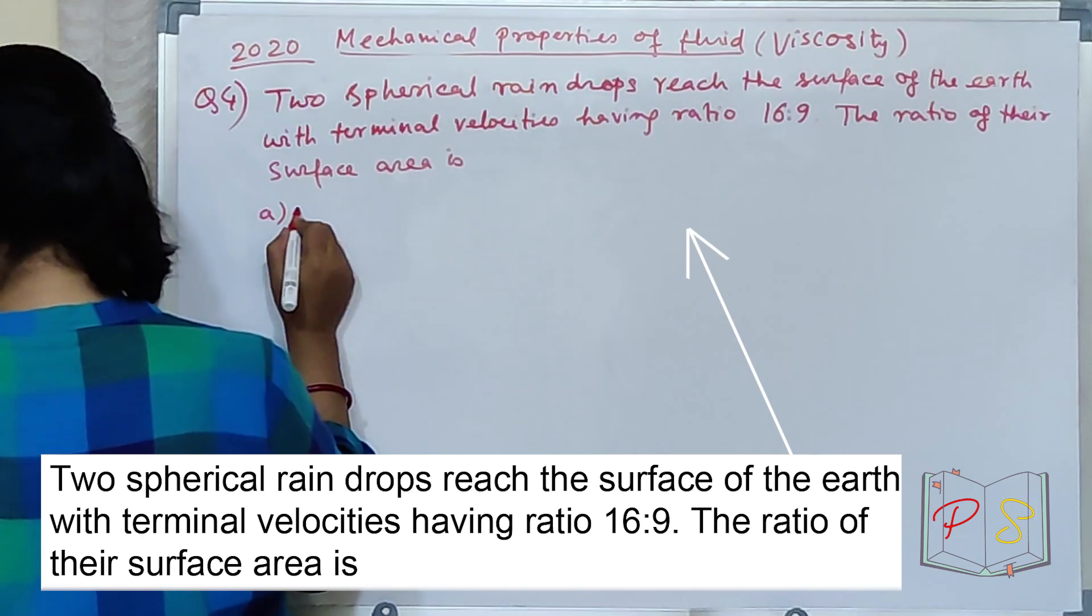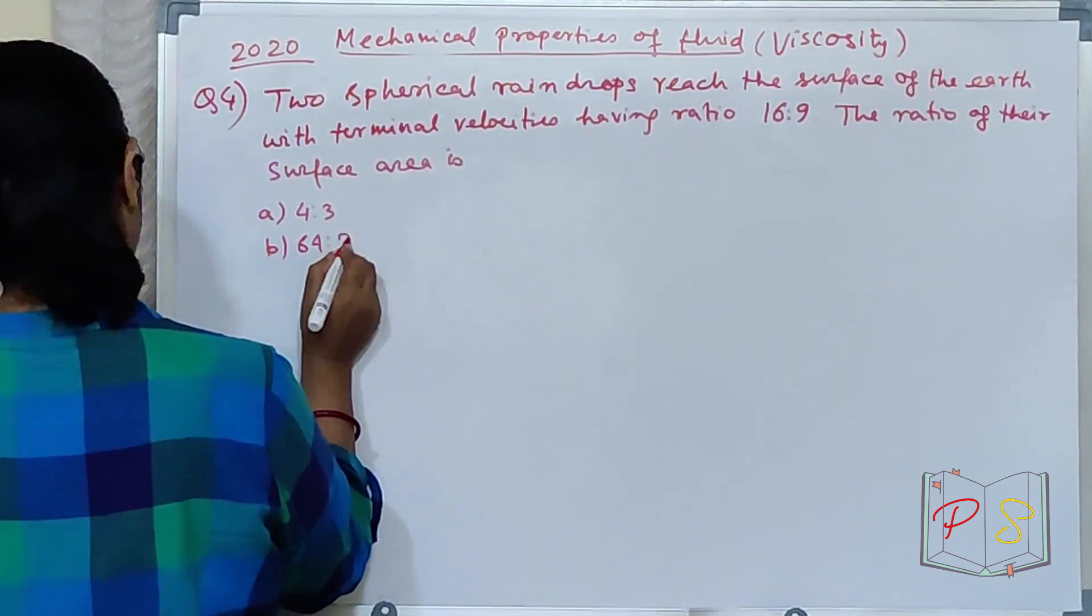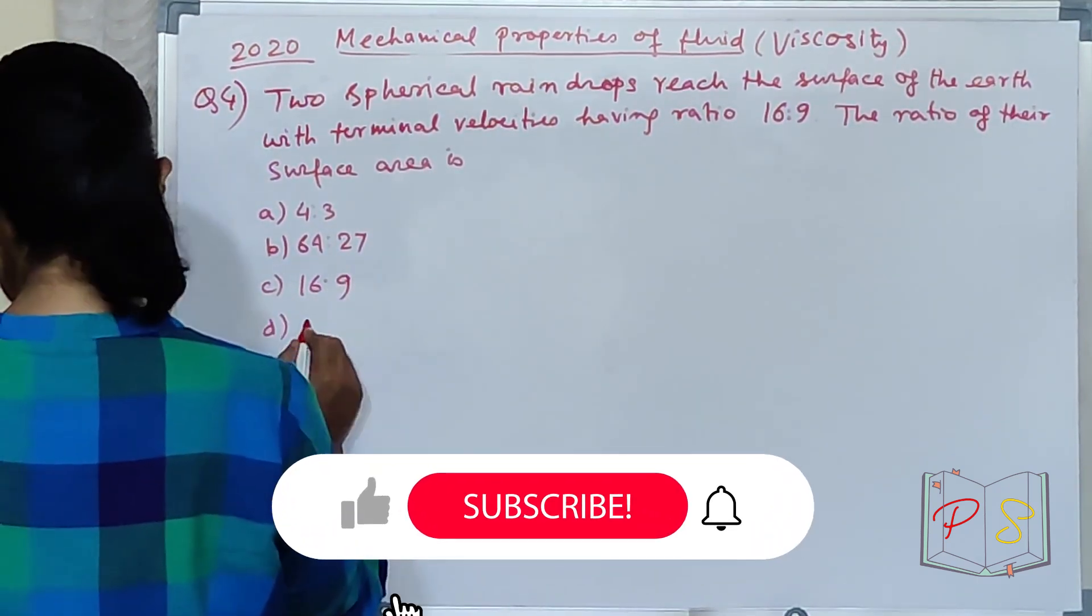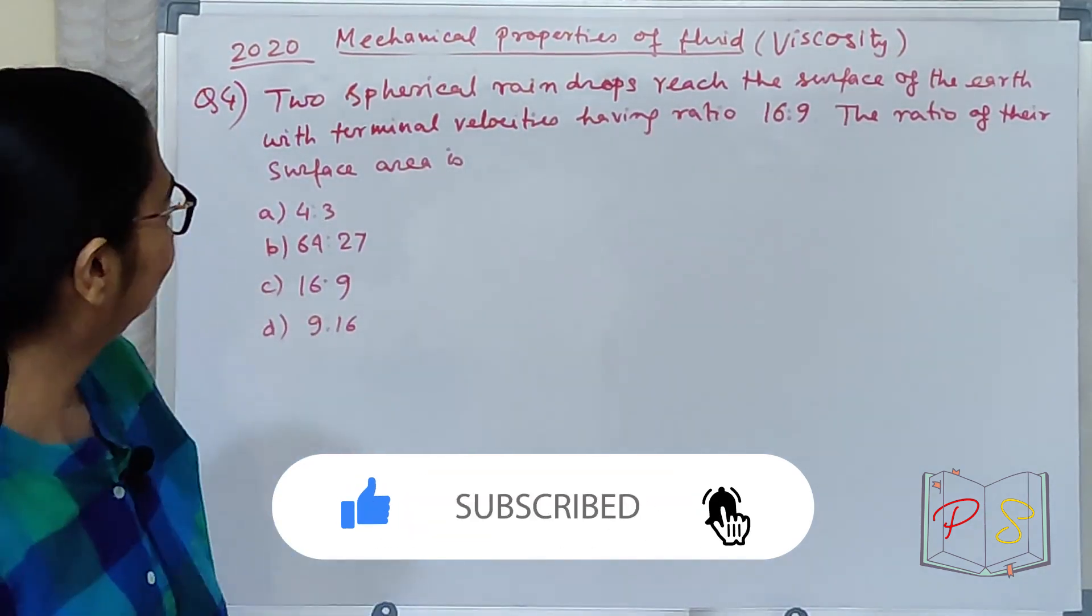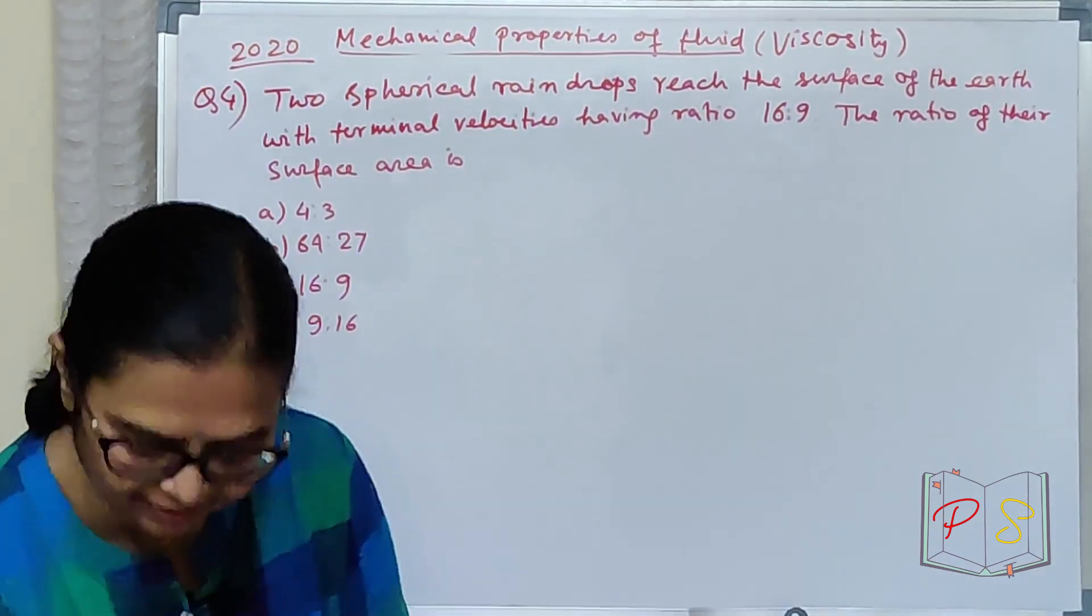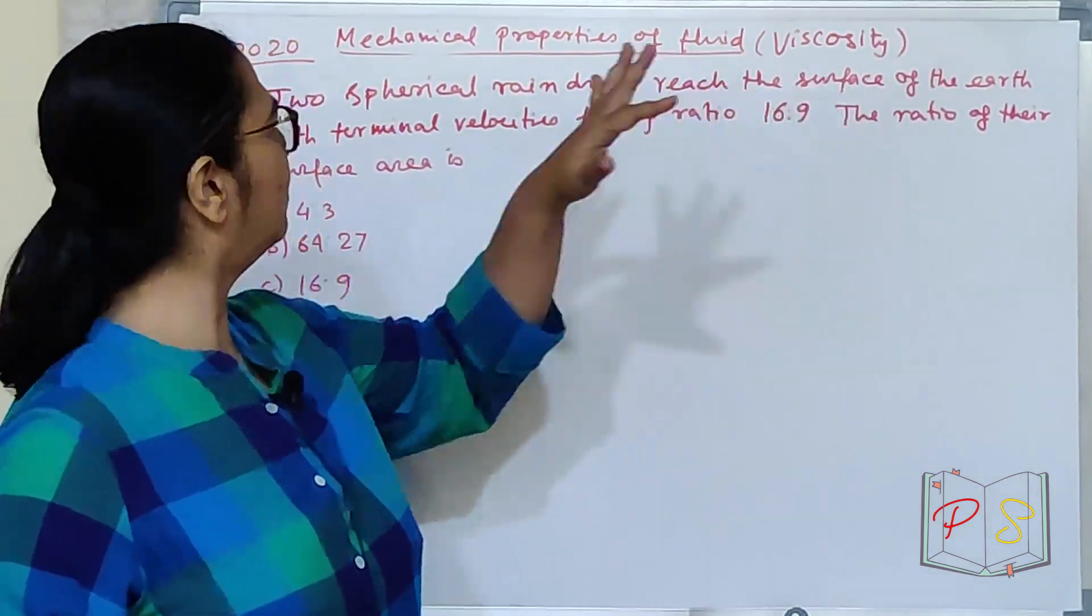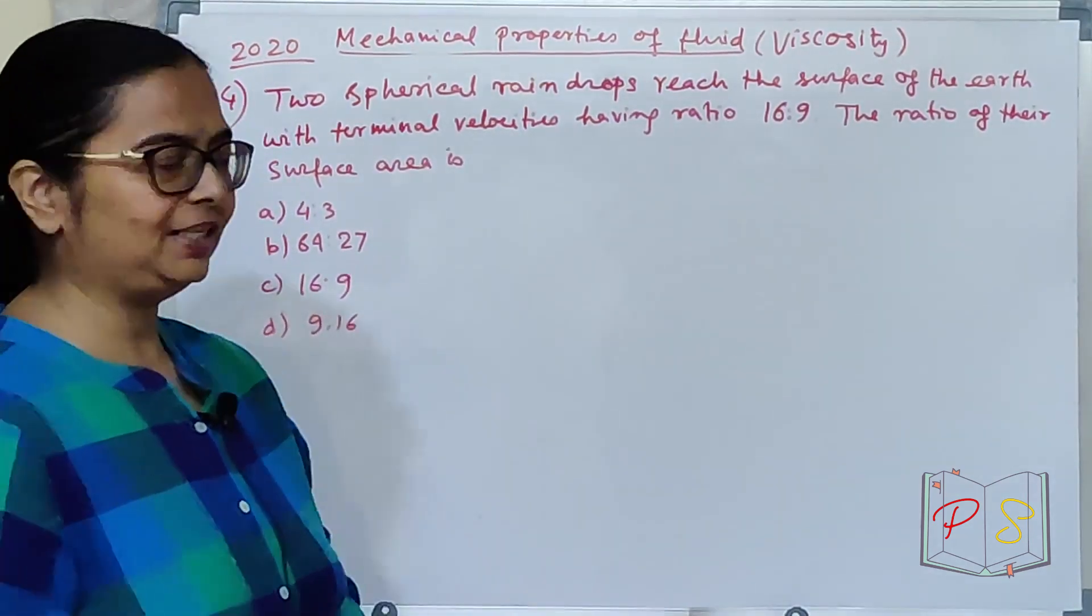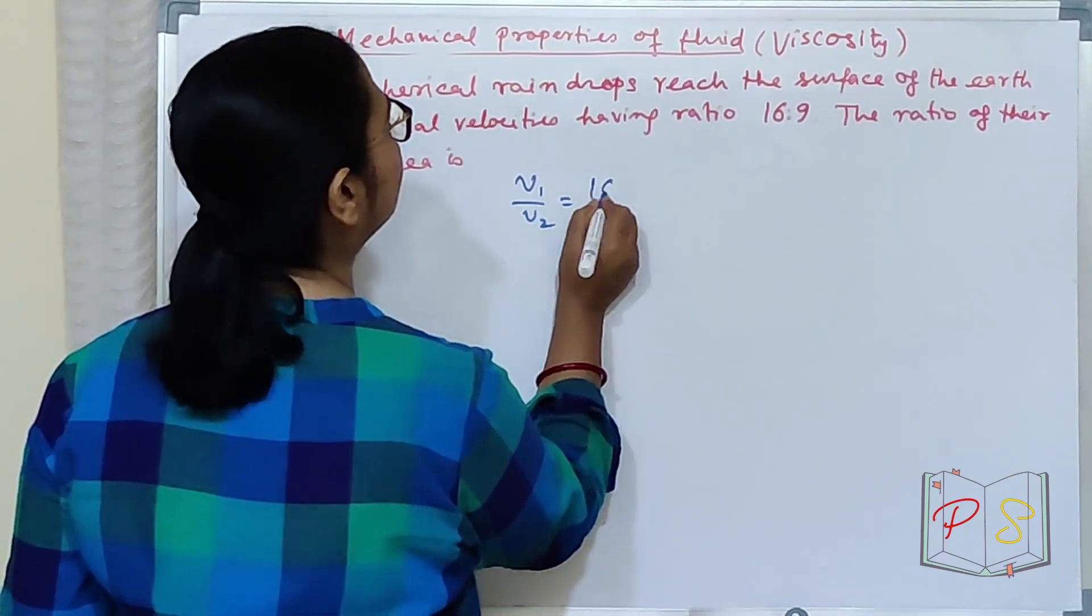Aapka option jo hai? O hai 4 is to 3. B option is 64 is to 27. C option is 16 is to 9 and D option is 9 into 16. Chia bulh rhea hai? Easy hai. Baut easy hai. Ka rpa hai ho? Two spherical raindrops reach the surface of earth with terminal velocities having ratio dis. Terminal velocity ka ratio dehiya. Achhi baat hai.